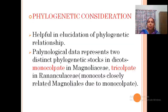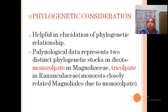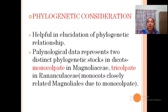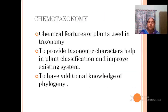Pollen is also used to study phylogenetic relationships. The monocolpate pollen character is found in Magnoliaceae and also in monocots, which helps in studying phylogeny. With that, we have finished palynology, and now we move on to chemotaxonomy.